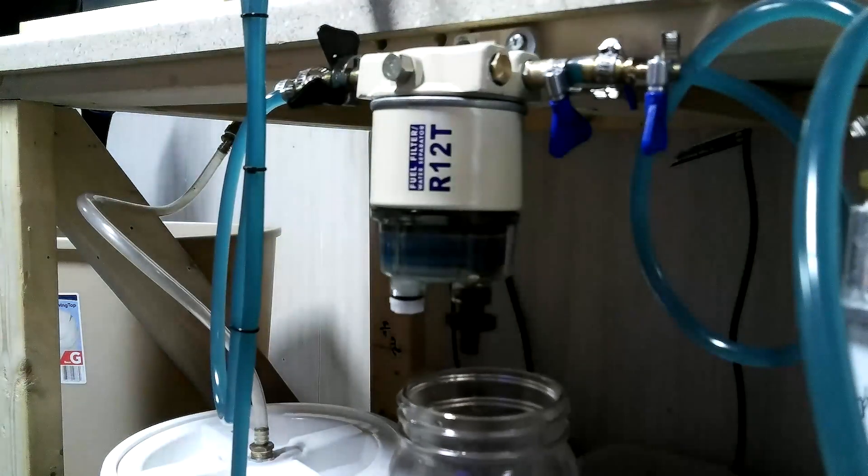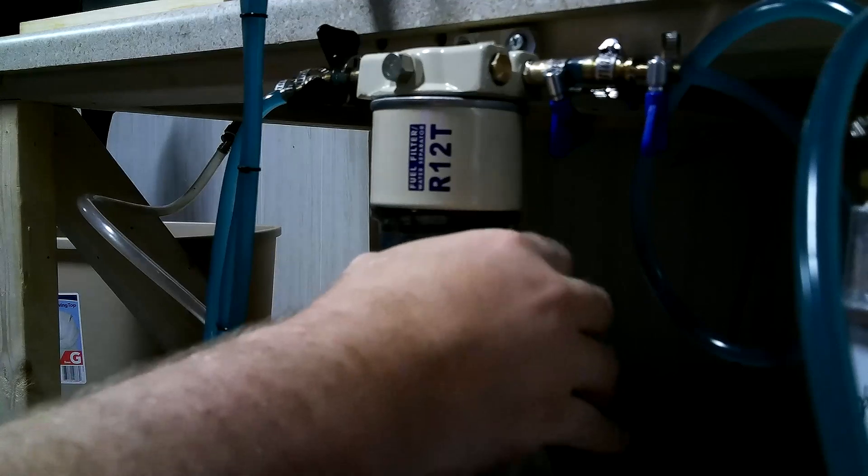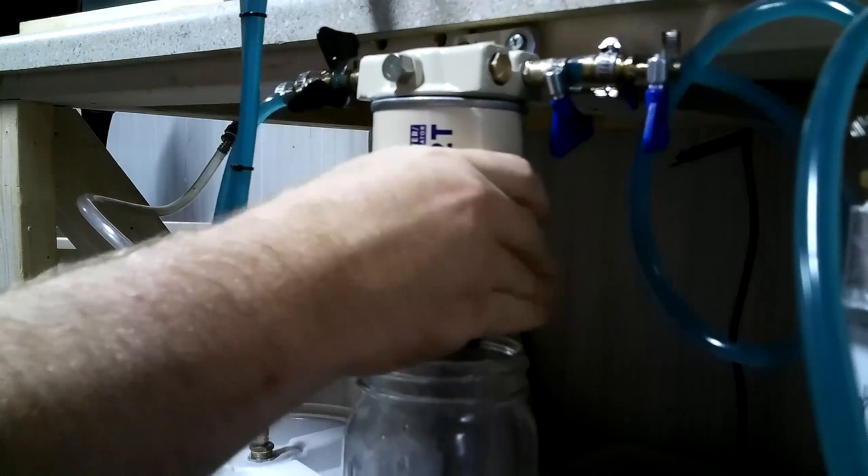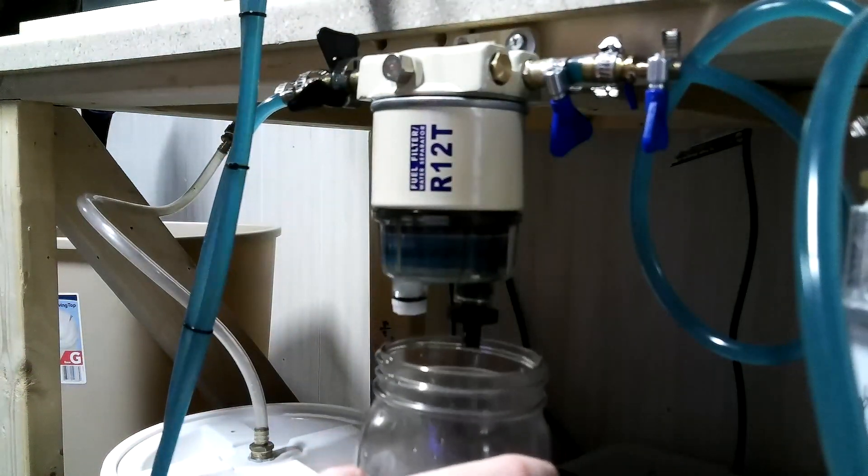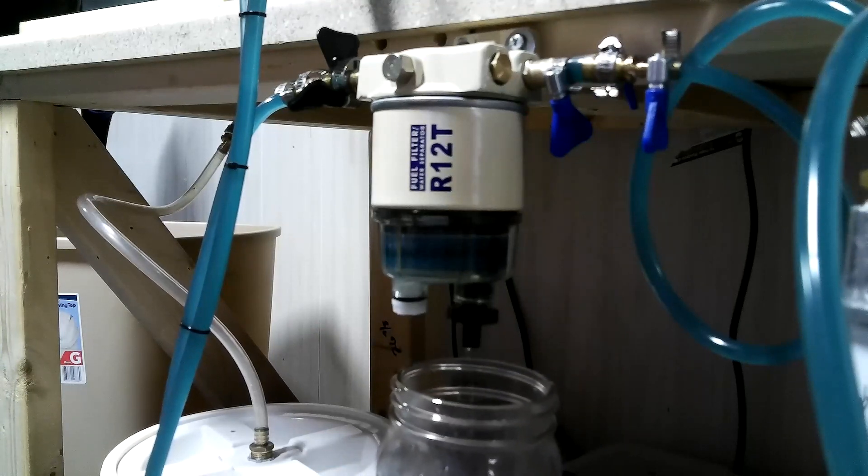You're going to see that there's a thin white line at the bottom full of water. Here I am tapping it because sometimes it gets a little stuck and needs a little help, but basically the water is going to push itself out. Here I am opening up the bleeder valve and the water is now flowing out.